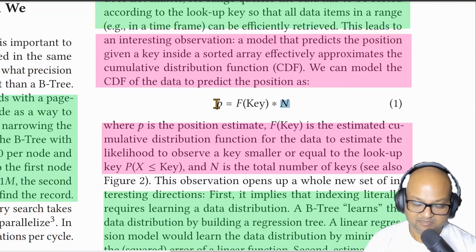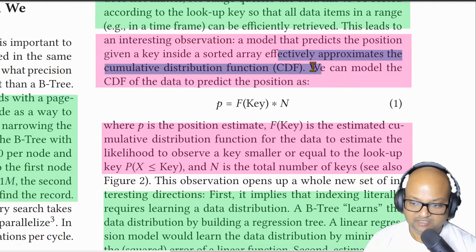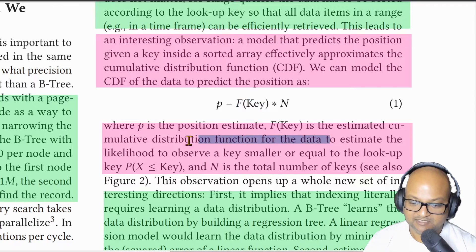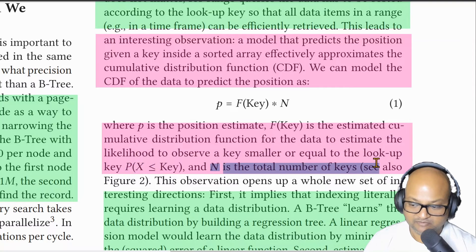Let's look at the basic mathematical idea behind building these models. We basically want to predict the position p of a given key, and we can reduce that to the problem of approximating the cumulative distribution function of the underlying data. So if we learn that function f, f of the key is an estimate of the likelihood of observing a key smaller than the one we're looking for. And if we multiply that by n, which is the total number of keys, we will get a prediction for the position at which we might find our key.